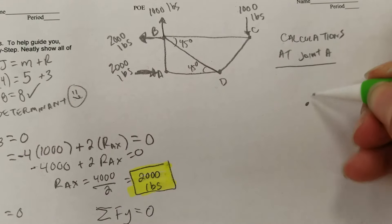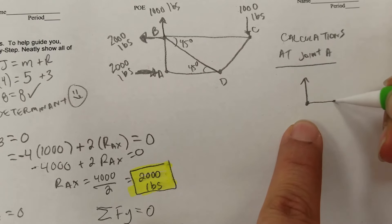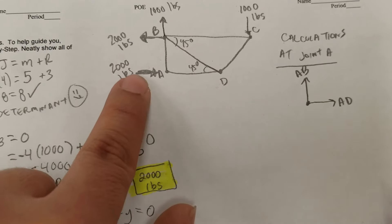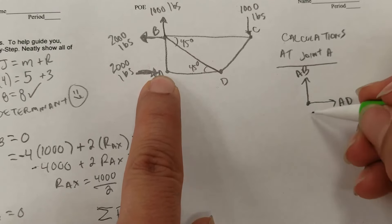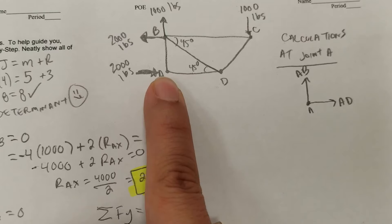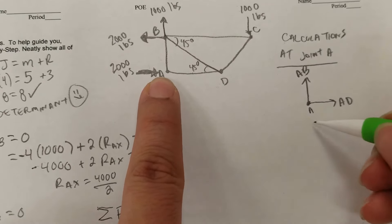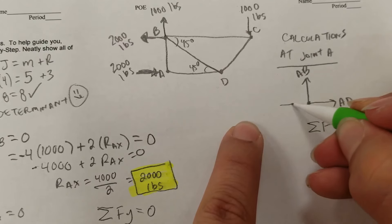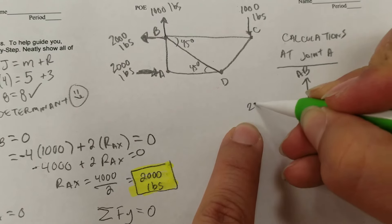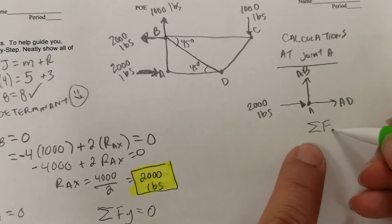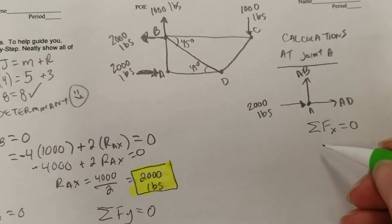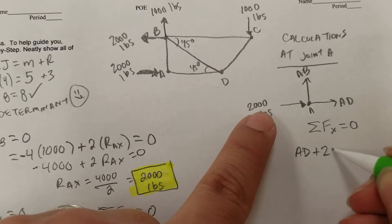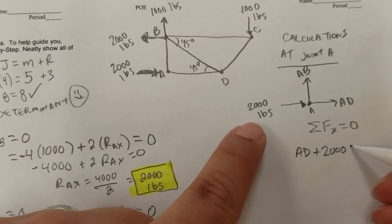At joint A we have two members: member AB (from A to B) and member AD (from A to D). There is also the 2000-pound external force going to the right. Taking the sum of forces in the x-direction and setting it equal to zero: member AD and the 2000-pound force are both positive since they're both going right, so AD + 2000 = 0.